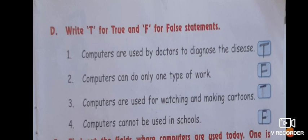On page 21, write T for true and F for false statements. Computers are used by doctors to diagnose disease — True. Computers can do only one type of work — False. Computers are used for watching and making cartoons — True. Computers cannot be used in school — False. So the answers are: True, False, True, False.